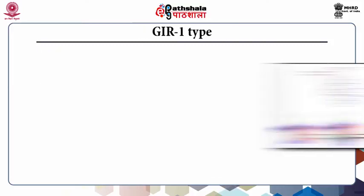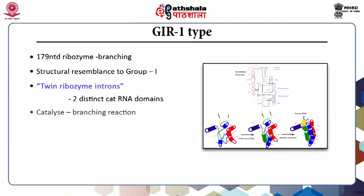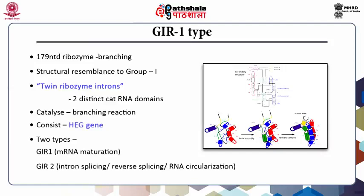The discovery of GIR1 ribozyme resulted from the functional characterization of introns from extra-chromosomal recombinant DNA of Didymium iridis. The GIR1 branching ribozyme, now also known as the lariat-capping ribozyme, has about 179 nucleotides and bears a structural resemblance to Group 1 introns. Its features are clearly depicted in this slide.